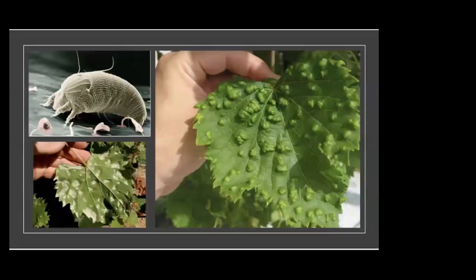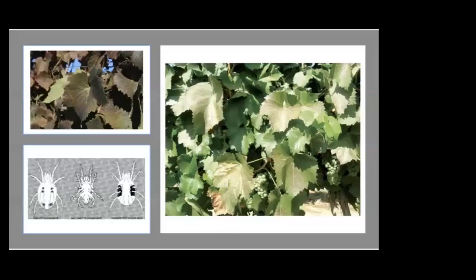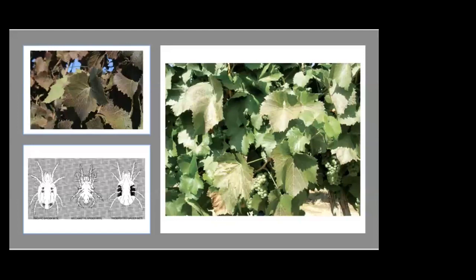Grape erineum mite, also referred to as the blister mite, is a very tiny insect — about 0.25 millimeters in length and only visible under magnification. It causes blister-like swellings on leaves that indicate its presence, so you don't necessarily see the insect but you see the blisters. High infestations can lead to leaves partially expanding and then dying prematurely, or maturing and falling from the vine earlier than unaffected vines. Three spider mites commonly damage grapevines: Pacific spider mite, Willamette spider mite, and two-spotted spider mite. Their feeding damage causes leaves to turn yellow to bronze and can reduce sugar content, yield, berry size, and number of fruit clusters.